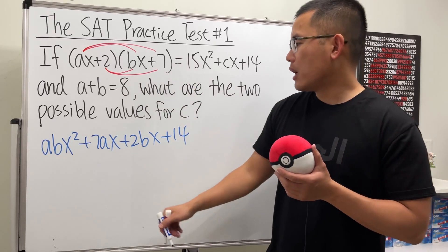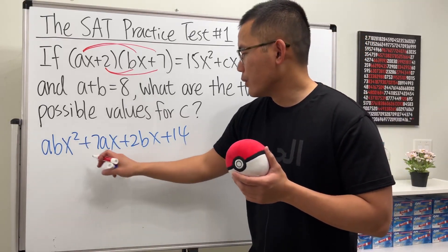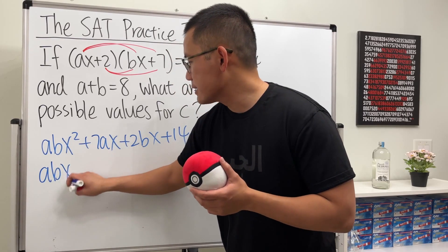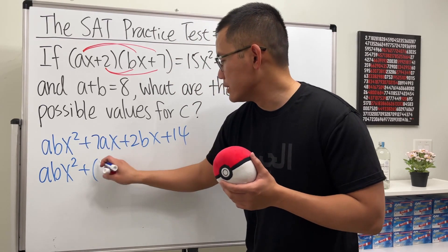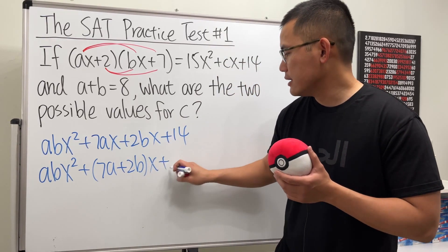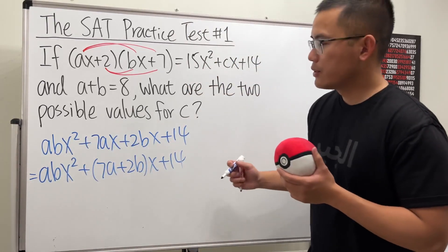Good. And from the middle part, we can combine this and that in the sense that we can factor out the x. So when we do that, we see this is just going to be abx² plus (7a + 2b)x, and then this is plus 14 right here. So this is the same as the original. That's good.